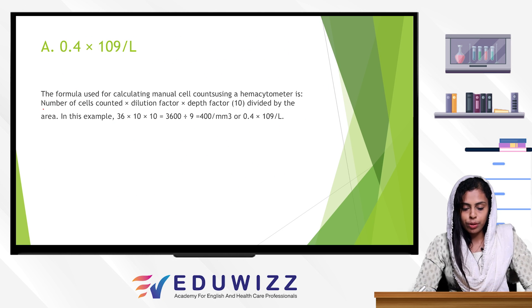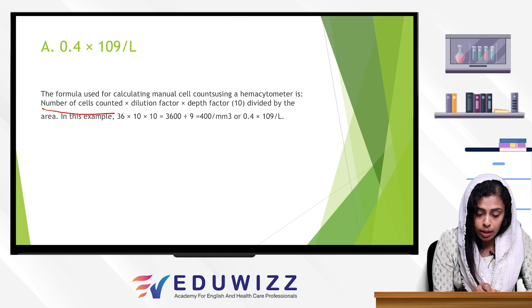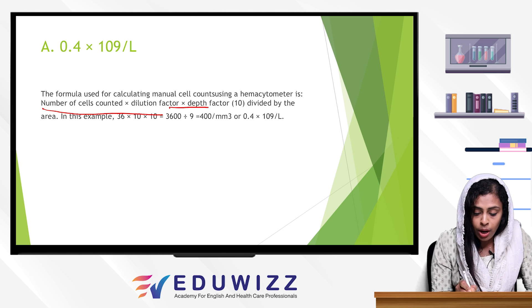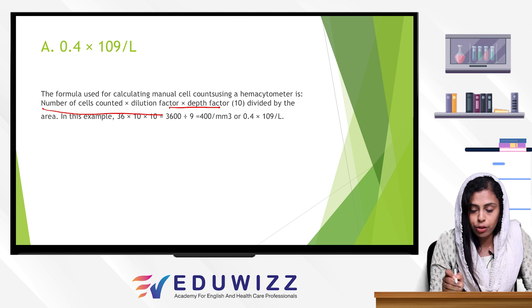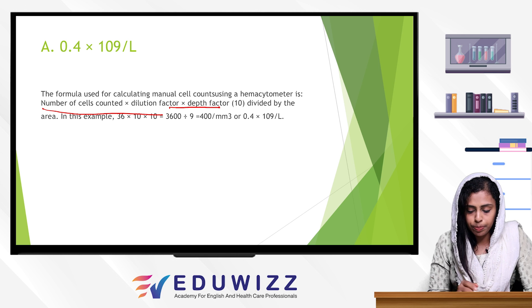The formula used for calculating manual count is: cells counted × dilution factor × depth, divided by area counted.